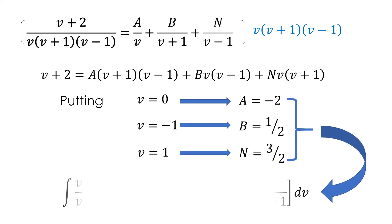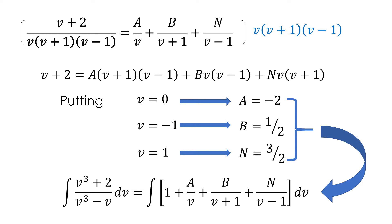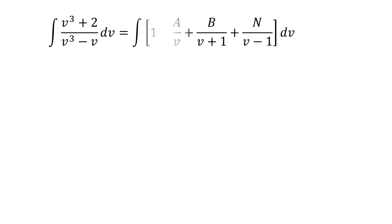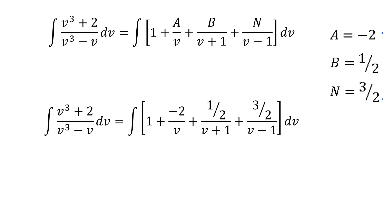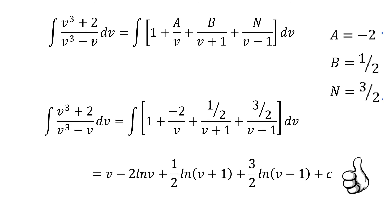Substituting the values A = −2, B = 1/2, and N = 3/2 back into the integral, the first term integrates directly by applying properties of integrals, while the remaining terms are solved using the logarithm formula. Our final answer becomes: v − 2 ln|v| + (1/2) ln|v + 1| + (3/2) ln|v − 1| + C.